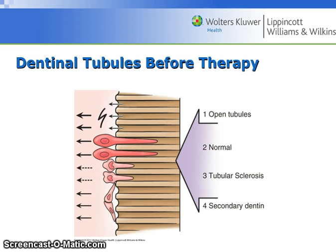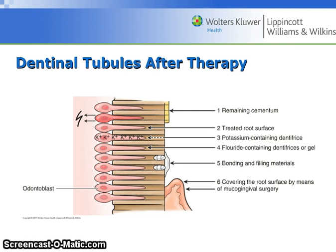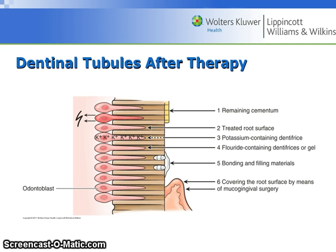This is figure 24.7 on page 406, showing various possibilities for dentinal tubules following therapy. The dentinal tubules prior to therapy may be open, sclerosed, or insulated from the pulp itself by the formation of secondary dentin. Chemicals can be used to occlude the dentinal tubules and to eliminate or minimize the associated dentinal sensitivity.